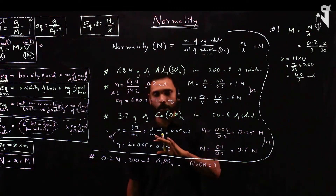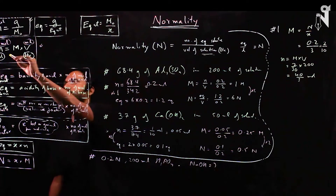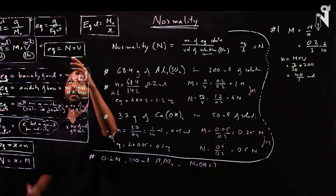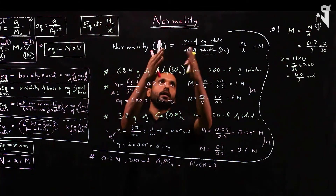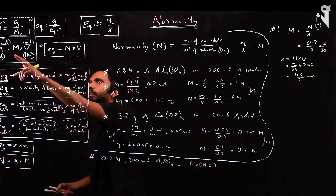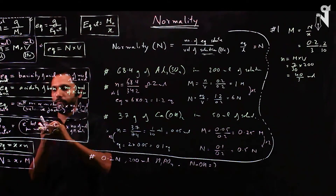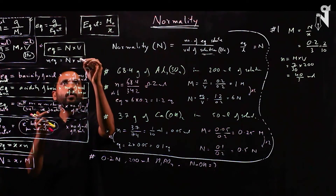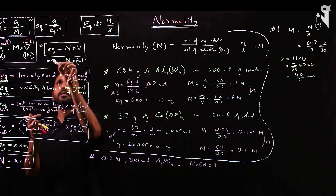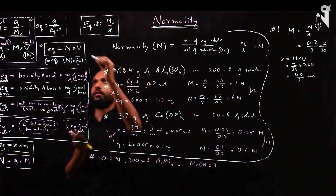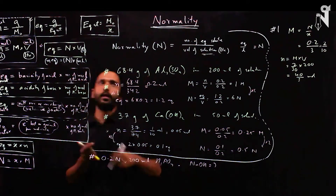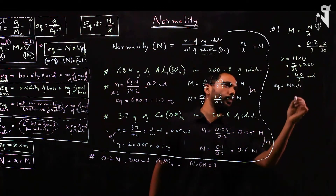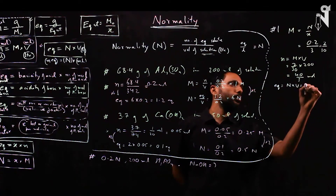Alternatively, get equivalents first: number of equivalents = normality × volume. In milliliters, milliequivalents = normality × volume in mL = 0.2 × 200 = 40 milliequivalents. Then number of moles = equivalents ÷ X factor = 40 ÷ 3 = 13.33 millimoles.